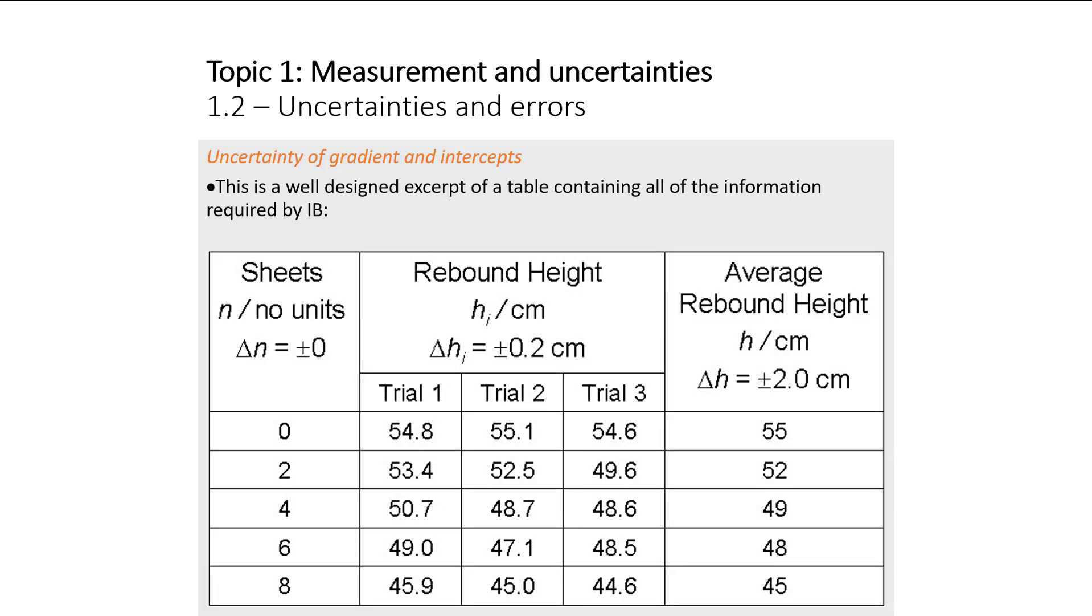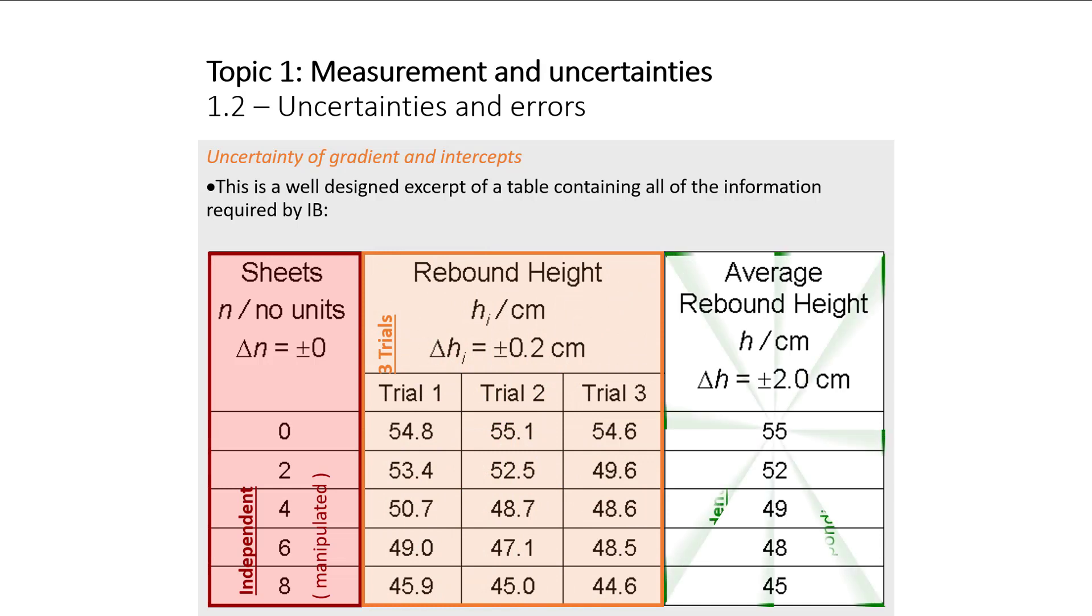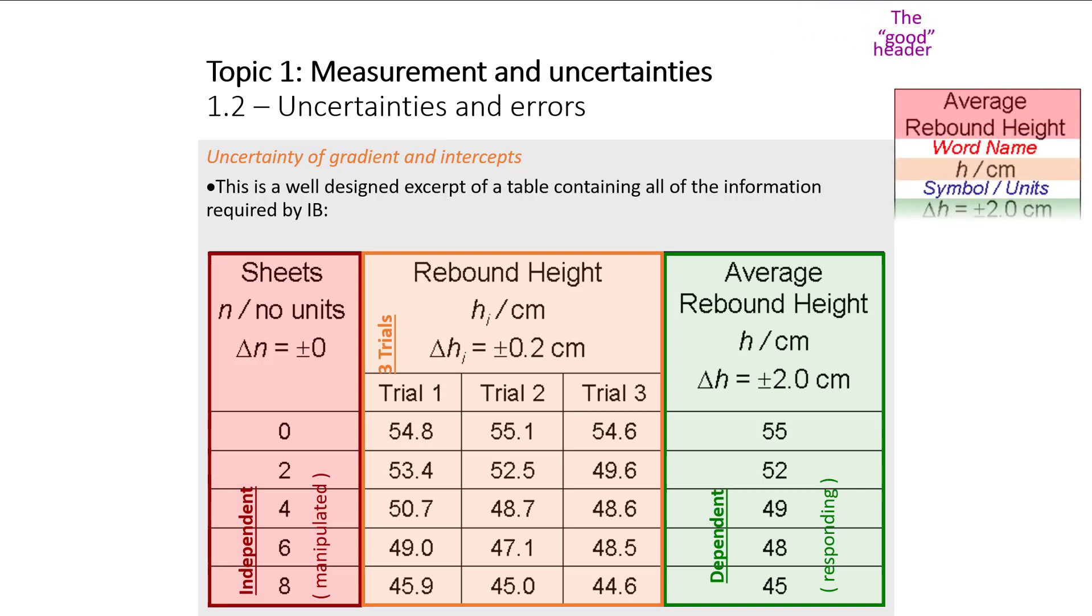Here's what a good data table looks like. On our left we have the independent variable. Here in the middle we have our raw data, our sample data for each of the trials of our dependent variable. And here we have an average of our three trials, a column for the average of our three trials for each variation. So this is going to be like our dependent variable. And if we look at the headers, these are really good headers. It has all the information that we need about our variables.